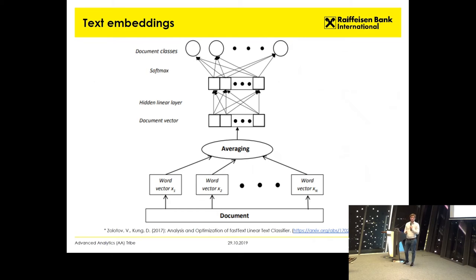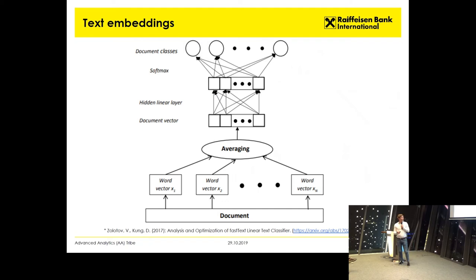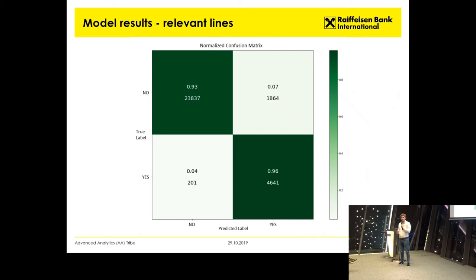How does the model work? At the beginning you have a document — in our case, we have lines. We split each line into words, and for each word we have a word embedding. Then we aggregate the word embeddings so we have an embedding per line. Then the model performs a multinomial logistic regression in the background. In the end there is a softmax layer and you have results. It's very fast.